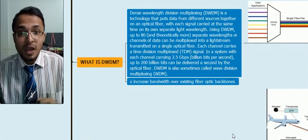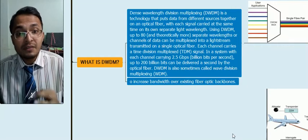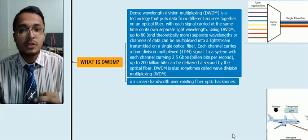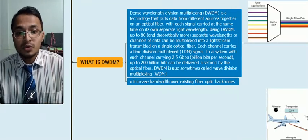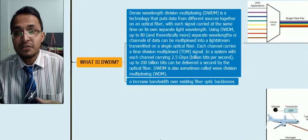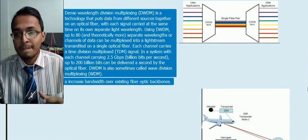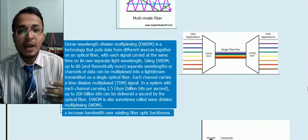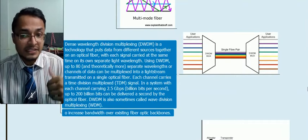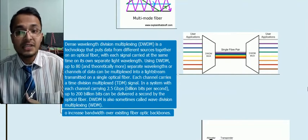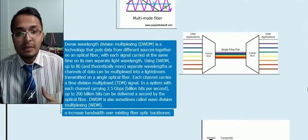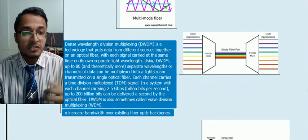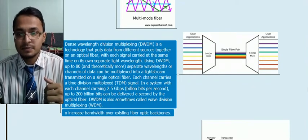Talking about DWDM — Dense Wavelength Division Multiplexing. It is a technology that is applied to optical fiber to increase the bandwidth of the existing fiber. As you can see in the diagram, the bandwidth is further divided and transmitted on a single fiber cable. It is also sometimes known as Wave Division Multiplexing.